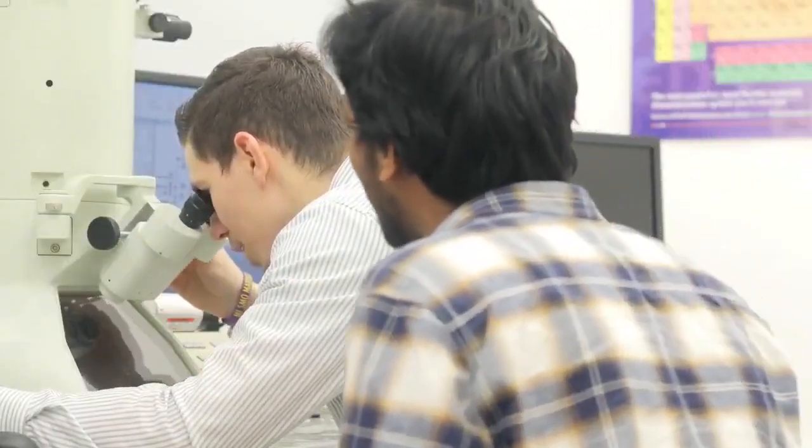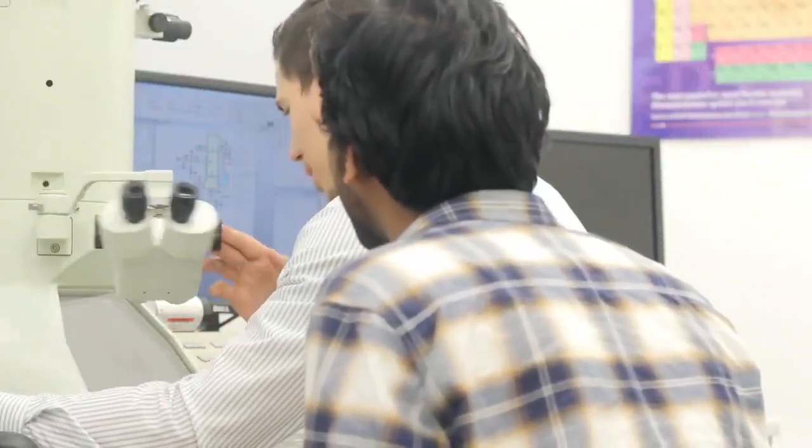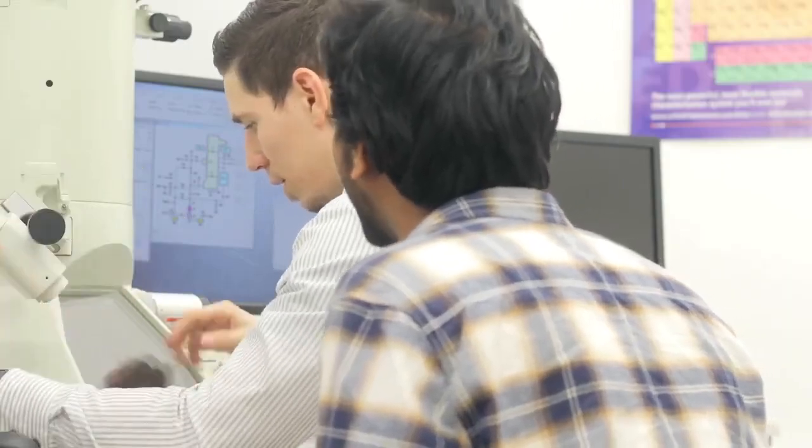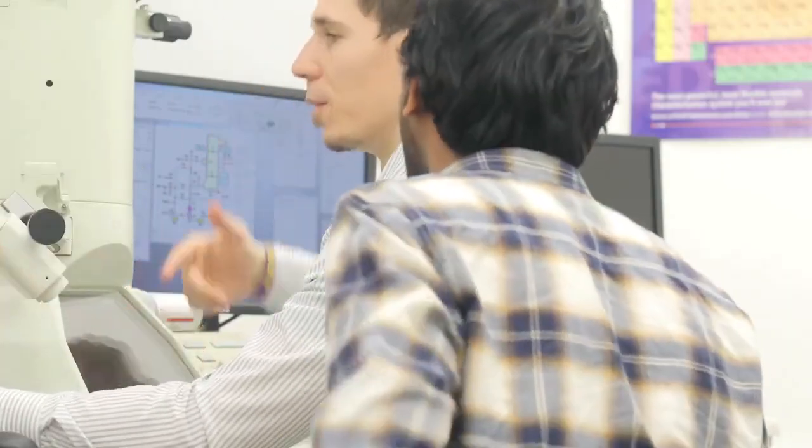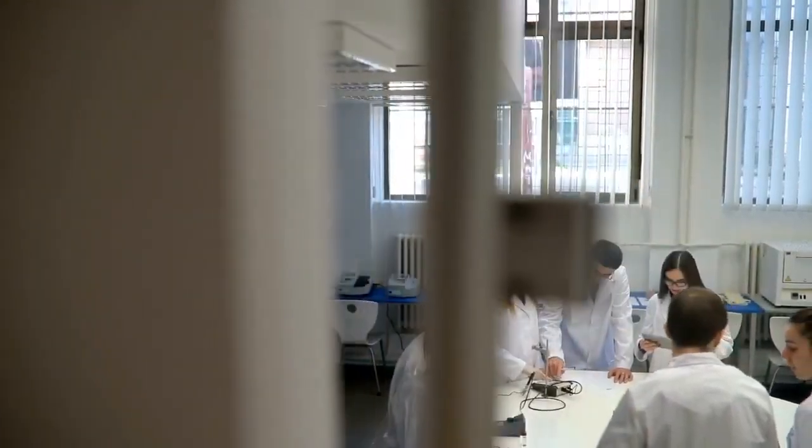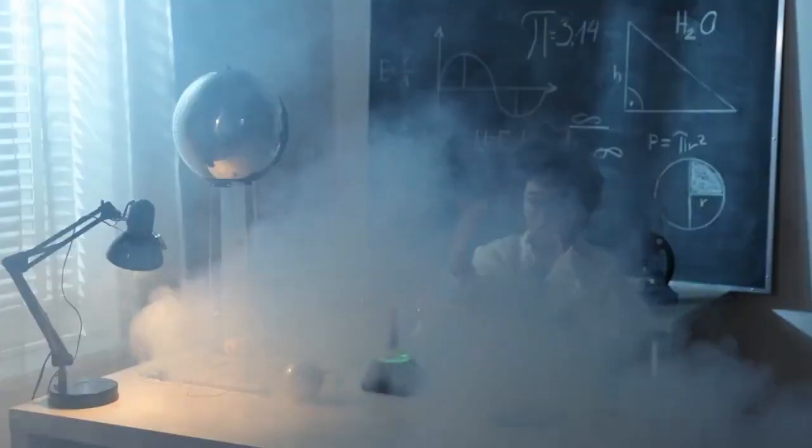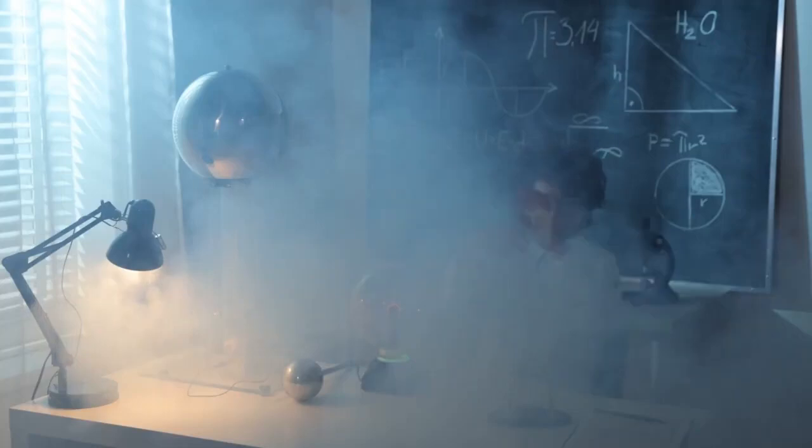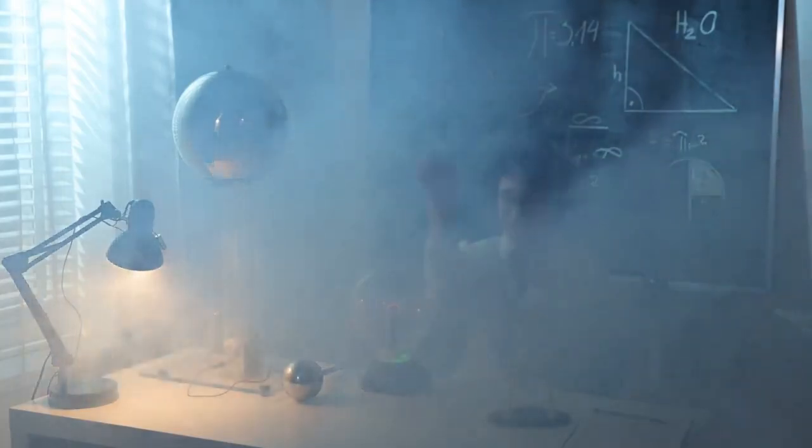Despite its enormity, measuring Betelgeuse has proven to be problematic. The star's atmosphere is complicated and turbulent, and its size changes according to what light wavelength one uses to measure it. Infrared measurements tell us that it's a whole lot bigger than visible light observations imply, so it's a tricky target to define.